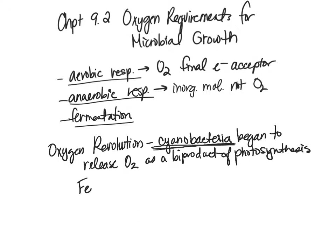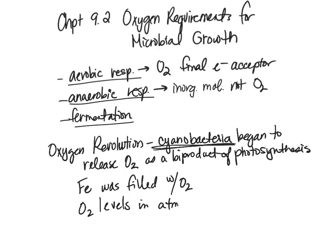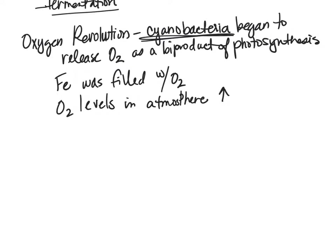There was lots of iron around at that time, and it attached to the oxygen. But at a particular point in time, the capacity for iron to hold onto oxygen was filled — all the accessible iron was saturated with oxygen. So then oxygen levels increased in the atmosphere, because iron was no longer around to tie up oxygen.